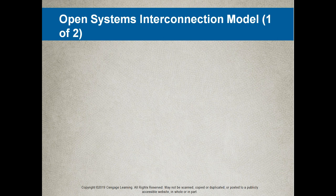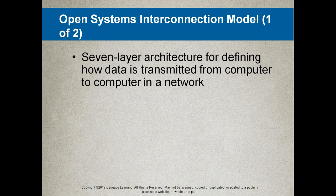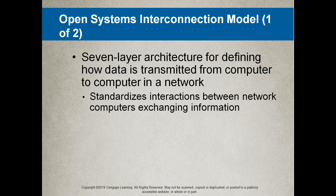Let's take a look at the open systems interconnection model. Remember this is just a model — no actual system will implement it exactly. It is a way for researchers and engineers to design systems. There are seven layers, and the seven-layer architecture is used for defining how data is transmitted from computer to computer in a network. It standardizes interactions between network computers exchanging information.